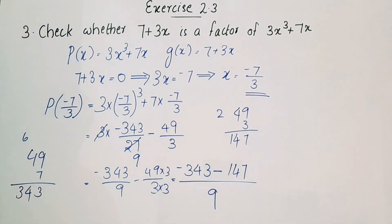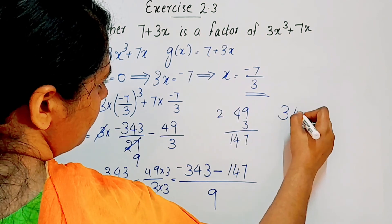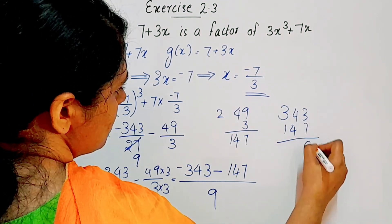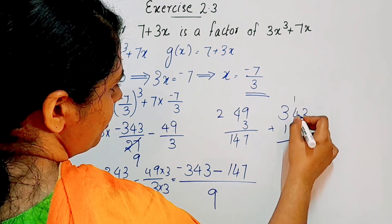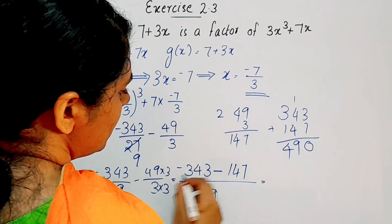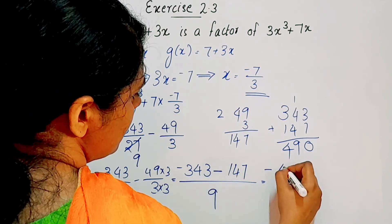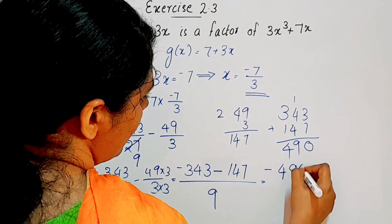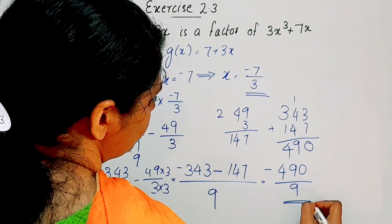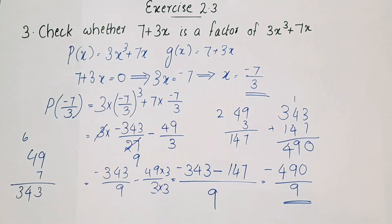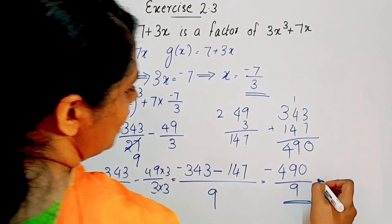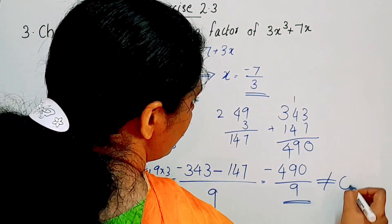Working through the arithmetic: 343 and 147 give us numerator terms. With denominator 9, we get 4 plus 4 equals 8, plus 1 equals 9, and 3 plus 1 equals 4, combining to negative 490 over 9. Since negative 490 over 9 is not equal to 0, the remainder is not zero.